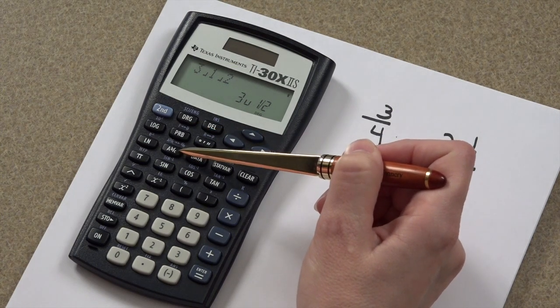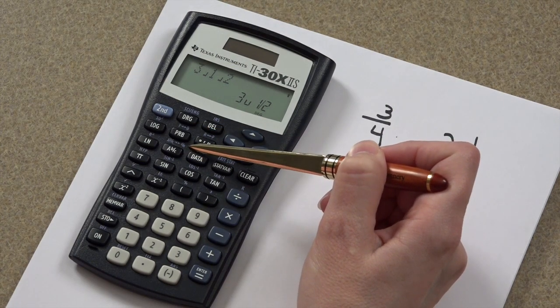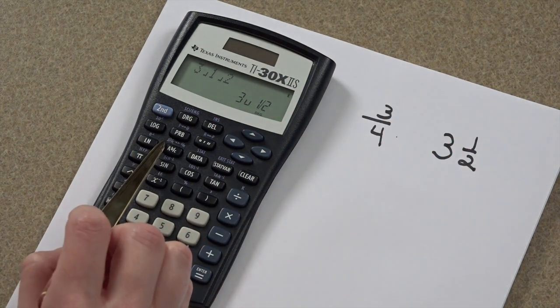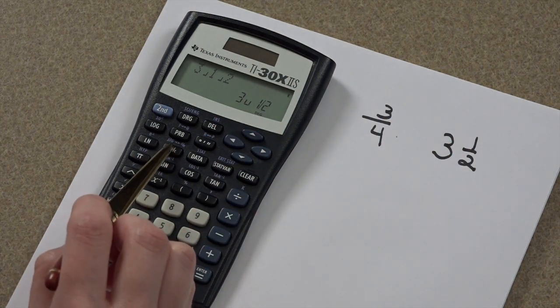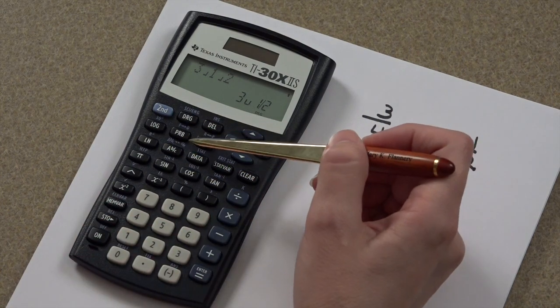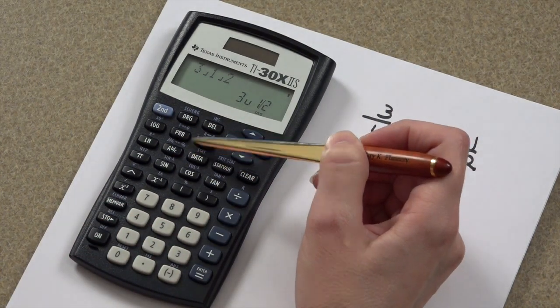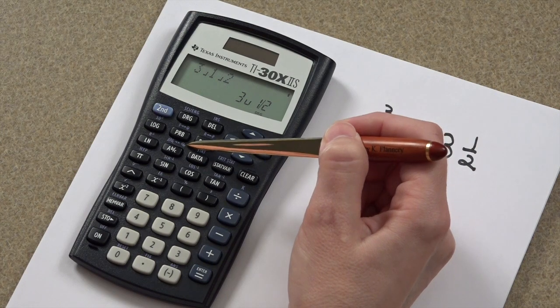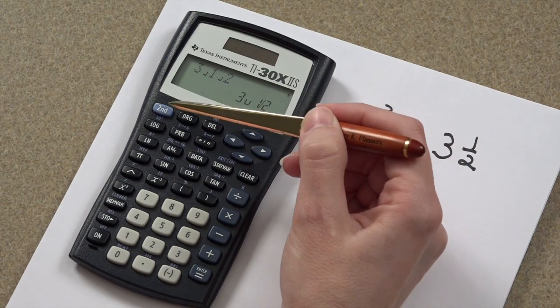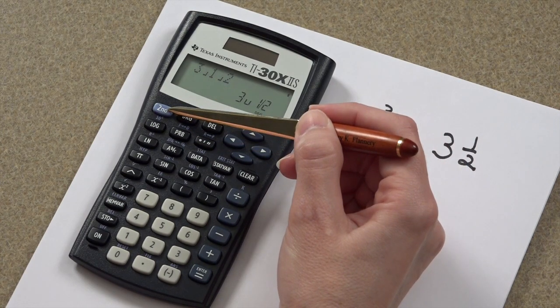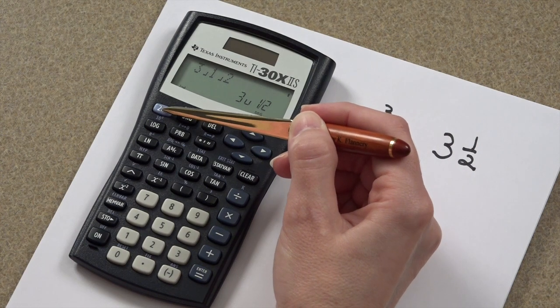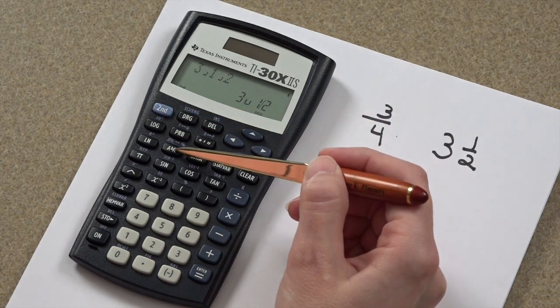Notice that you've got this fraction key, but right above it, you have this ABC with these two arrows right there and a DE. Your calculator converts. Now, because this is up here, we need our second button before we can access the conversion. So we'll press the second key and our fraction key.